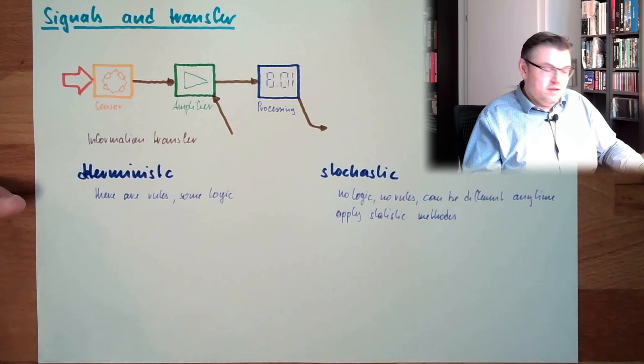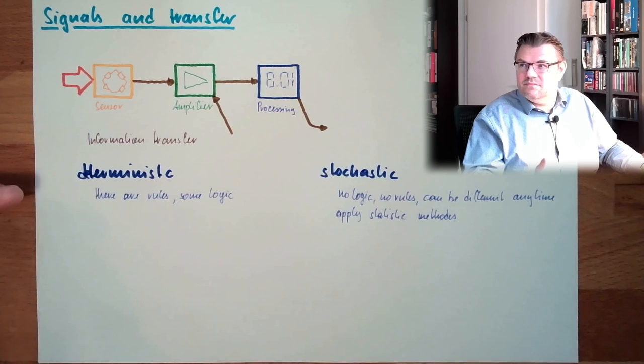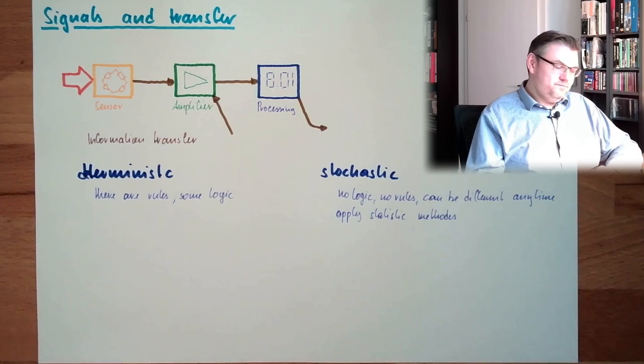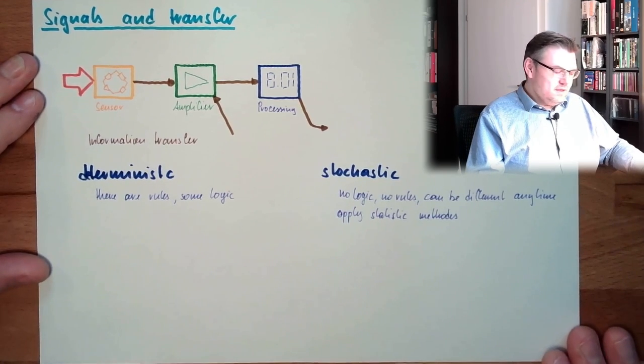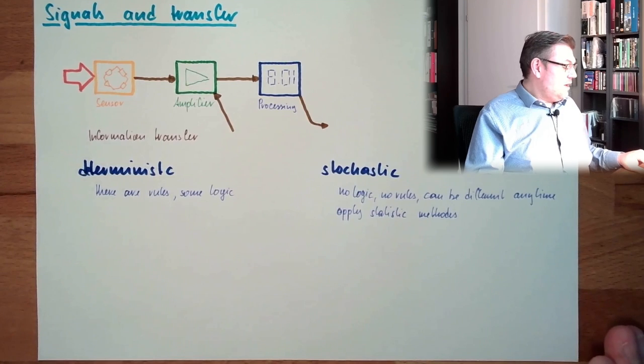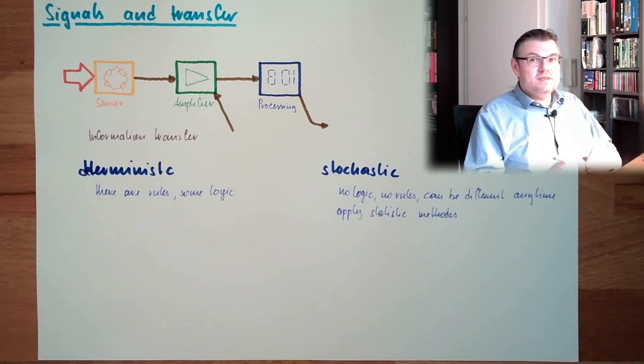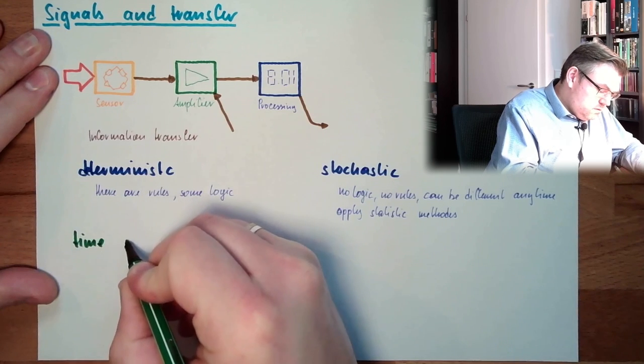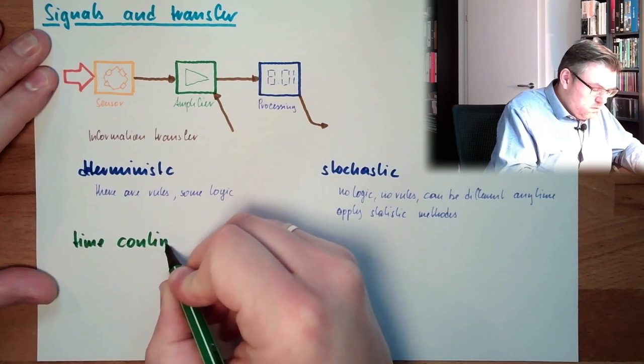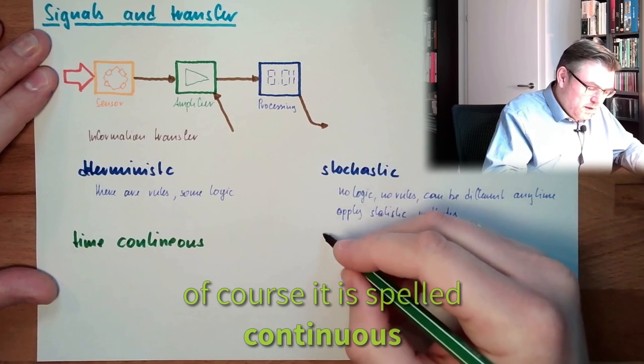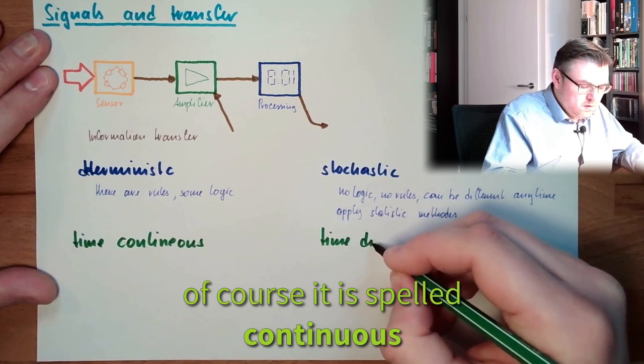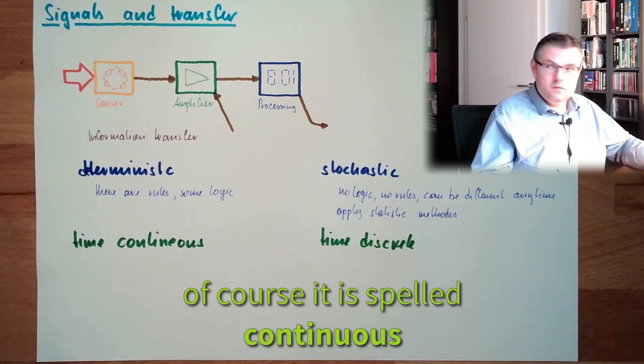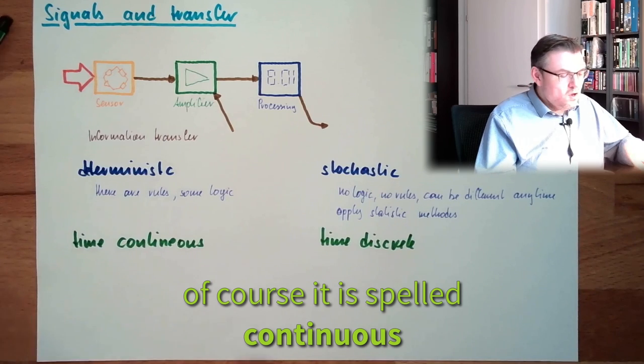Deterministic and stochastic. Usually we want to have deterministic signals. And then, there are two types of signals. I think it will be clearer afterwards. Well, there is time continuous and time discrete.